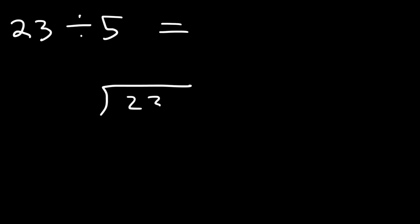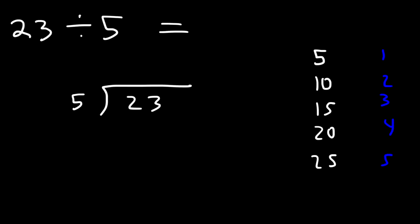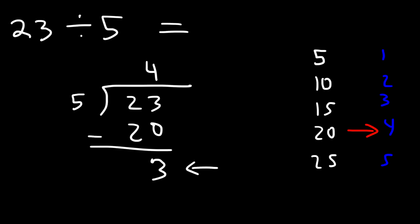So 23 is the dividend and 5 is the divisor. How many times does 5 go into 23? Making a list: 5, 10, 15, 20, 25. Now 25 exceeds 23, so 20 is the highest number just under 23. 5 goes into 23 four times; 5 times 4 is 20. Subtract: 23 minus 20 is 3 — that's the remainder and the quotient is 4. So 5 goes into 23 four times with a remainder of 3.